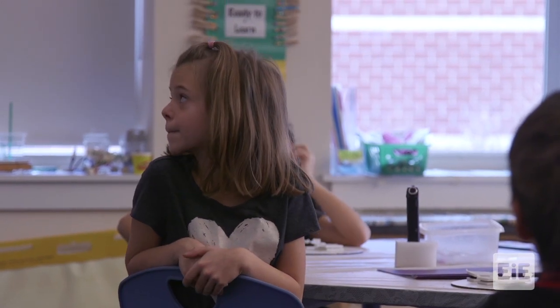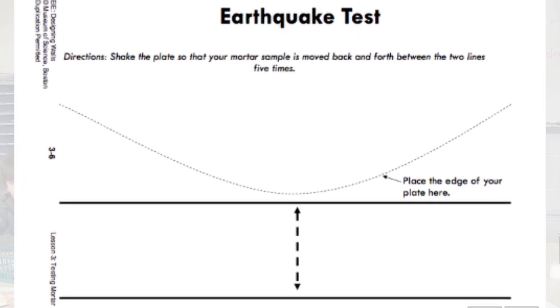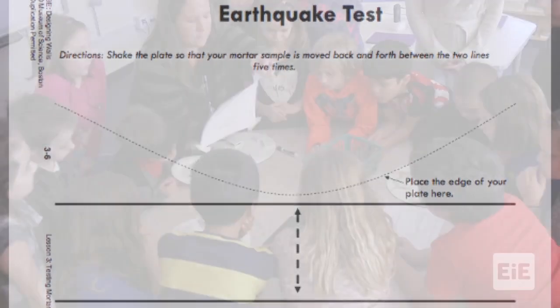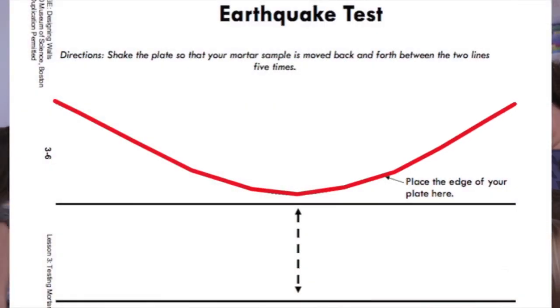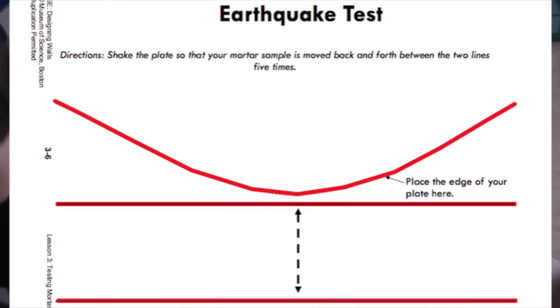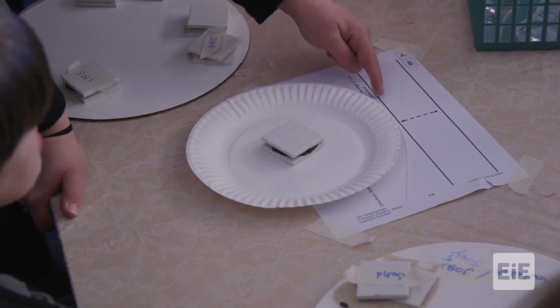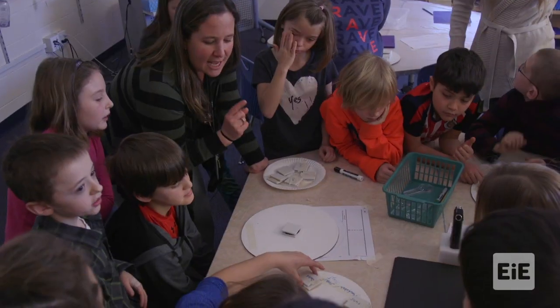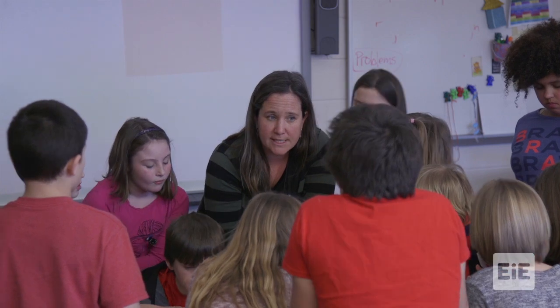So today we're going to do another test called the earthquake test. You should all have this on your table at this point. There is an arc right here and then there's two lines. You're doing the earthquake test on a sandwich — you're going to shake it five times back and forth between these lines. Test the soil first, and we're all going to stop and share results before we test the other two.